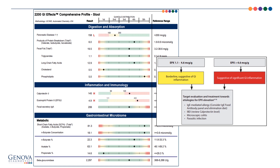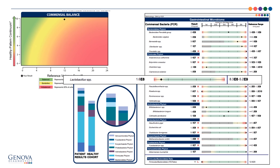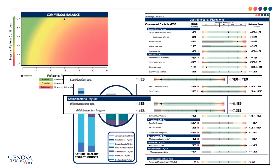We know from the first page that his commensal balance chart was in the yellow and his abundance was high. Looking at his results, both the lactobacillus and bifidobacterium are low, so he might benefit from some probiotics or probiotic foods.